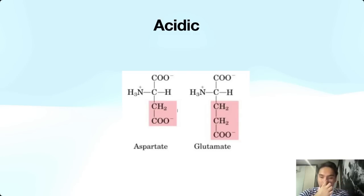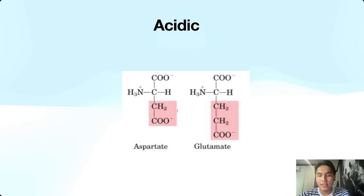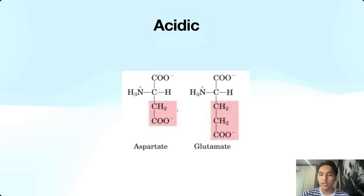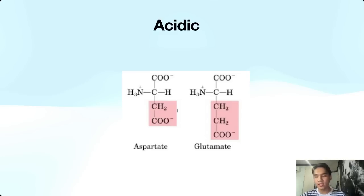The acidic amino acids are aspartate and glutamate — only two. Their side chains end in a COO group, like a carboxylic acid. When you add a hydrogen, aspartate becomes aspartic acid and glutamate becomes glutamic acid. Memorize both: aspartic acid and glutamic acid are the acidic amino acids.